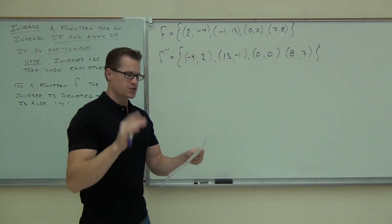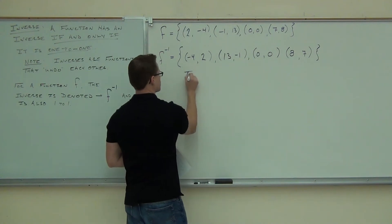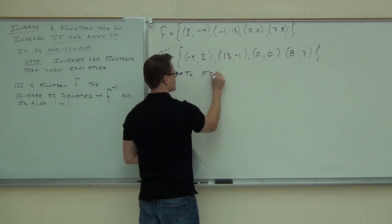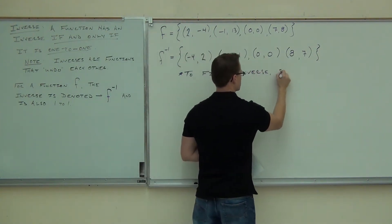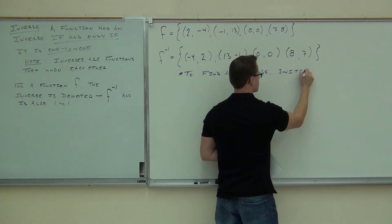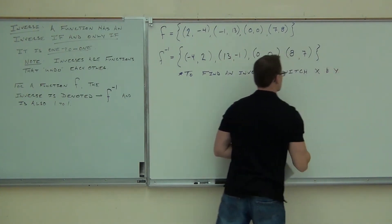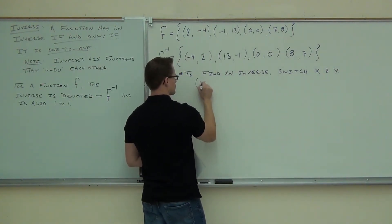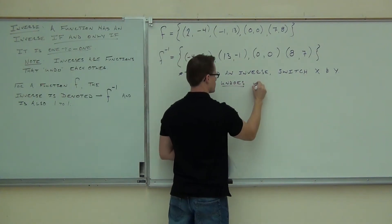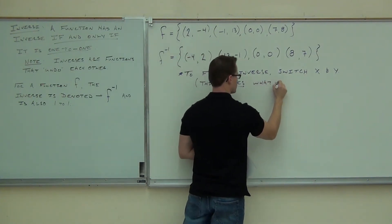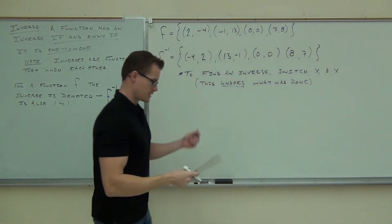So to find an inverse, we just switch X and Y. This undoes what was done — and this undoes what was done. It's as simple as that.